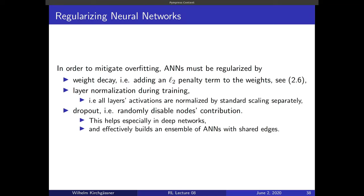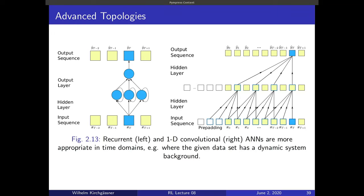Next to regularization for MLPs, there are also advanced neural network topologies. The standard MLP assumes IID (independent and identically distributed) data, not exploiting temporal dependencies between observations. For time series data, recurrent neural networks (RNNs) add recurring edges from a neuron's output back to its own input, with trainable weights, allowing the network to capture sequential dependencies.